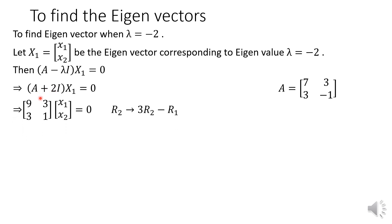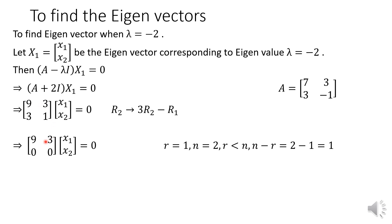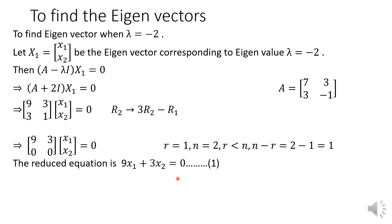So we get [[9, 3], [3, 1]] times x1 = 0. We make the second row zero using the operation 3R2 minus R1. The matrix reduces to [[9, 3], [0, 0]], so the reduced equation is 9x1 + 3x2 = 0.